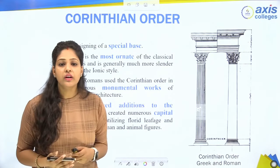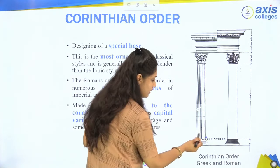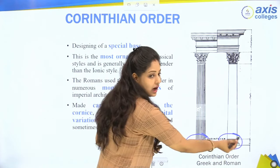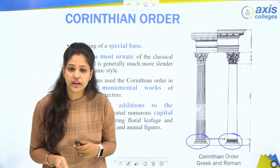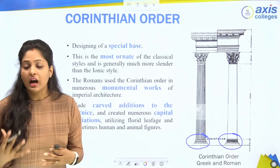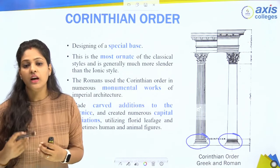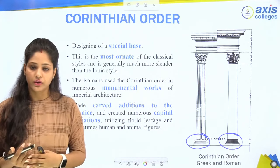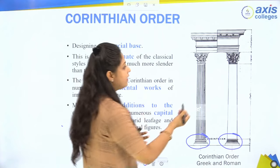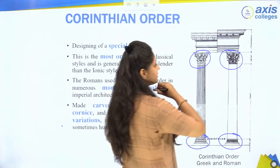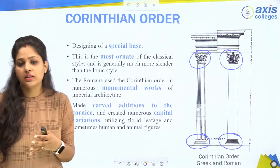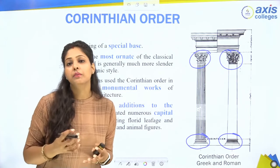The Corinthian order had a specially designed base. You can see the Greek base, and in the Roman base there is more detail as compared to the Greek order — more ornamentation, classical style. It was more slender than the Ionic order. In imperial architecture and monumental work, Corinthian orders were commonly used. In the capital you can see the acanthus leaves, and in Roman Corinthian there were variations where animal and human figures were combined with the leaves.